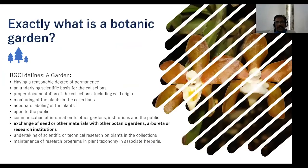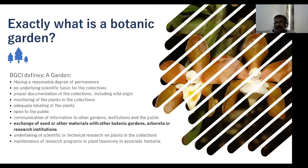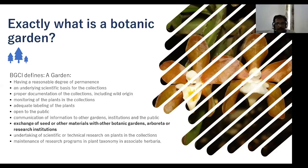A botanical garden, as defined by Botanical Garden Conservation International, is a place with a reasonable degree of permanence, an underlying scientific basis for its collections, proper documentation including wild origins, proper monitoring of plants, adequate labeling, openness to the public, communication of information to other gardens and institutions, and exchange of seeds and planting materials. Except for one parameter, MSSBG qualifies for all typical botanical garden characteristics.